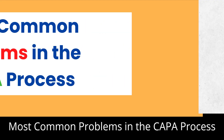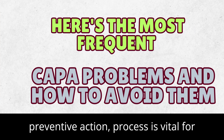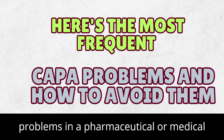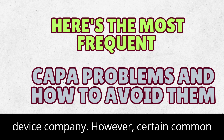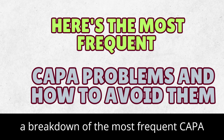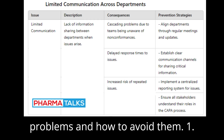Most Common Problems in the CAPA Process. An effective CAPA — Corrective and Preventive Action — process is vital for identifying issues and resolving quality problems in a pharmaceutical or medical device company. However, certain common issues can undermine the process.